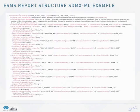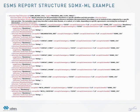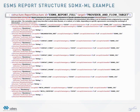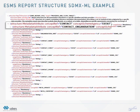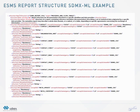Here is a sample of the full report structure that was defined in the previous scheme. One can see that the report structure is linked to the full target identifier, provider and flow target, which identifies the target objects to which metadata attributes are attached. For example, the contact metadata attribute. Also highlighted is the contact organization, which is defined as a child of the contact attribute. The resulting hierarchy drives the presentation of the metadata report.